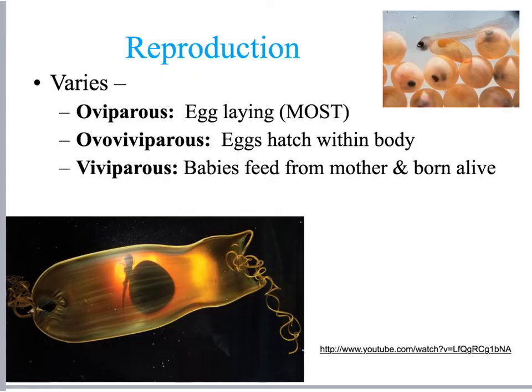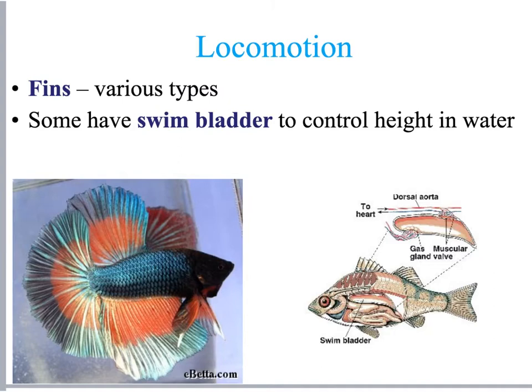Reproduction in fish occurs in three different ways. Oviparous means egg-laying, which is probably the most prominent. Ovoviviparous is when the eggs are fertilized but hatch within the body. Viviparous is when the babies are born alive, fed by the mom. Not only are the fins — dorsal fins, ventral fins, tail fin — used for movement and locomotion, but the swim bladder also aids locomotion by helping the fish adjust its height in the water, floating up, floating down, and maintaining position.